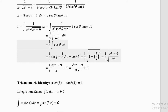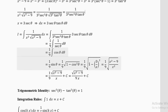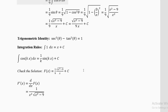After cancellation: tanθ cancels, secθ/sec²θ = 1/secθ = cosθ, and 3/27 = 1/9. So I = (1/9)∫cosθ dθ = (1/9) sinθ + C. Now cosθ = 1/secθ = 3/x, so sinθ = √(1 − cos²θ) = √(1 − 9/x²) = √(x² − 9)/x. Therefore I = (1/9) · √(x² − 9)/x + C = √(x² − 9)/(9x) + C.